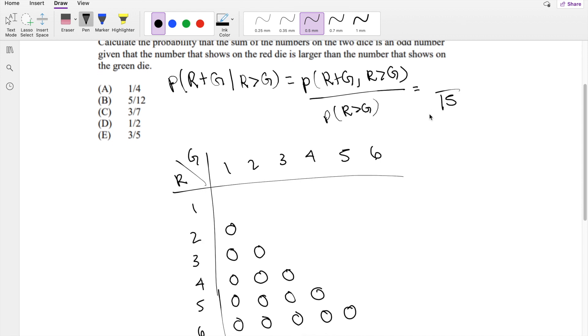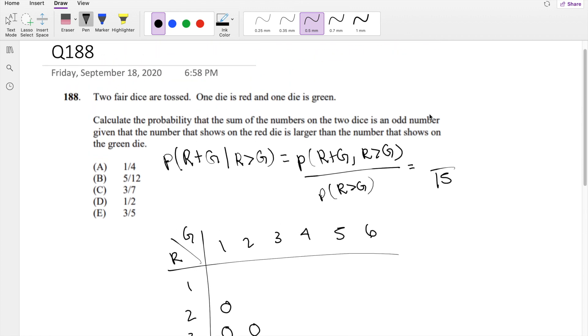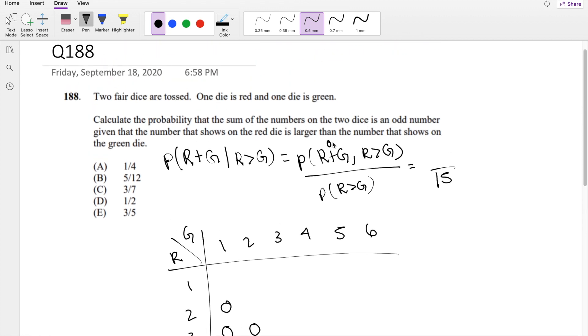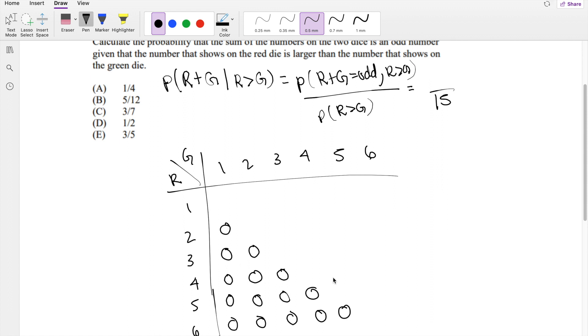And the numerator, we're looking for the intersection where R plus G is odd. I forgot to put that in there. And right here, we know that the circled ones are already where R is greater than G. So we just have to identify from the circled ones which ones are odd.